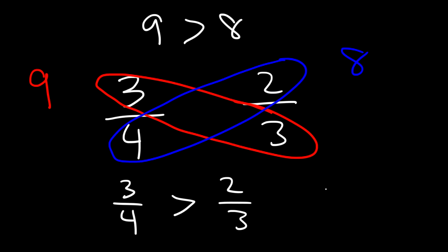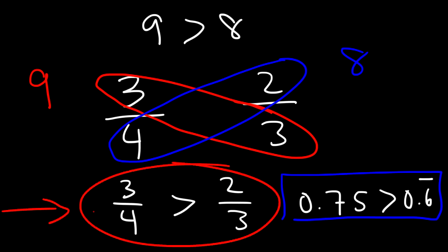Now we know 3 over 4 if you convert that into a decimal that's going to be 0.75. 2 over 3 if you type that in is 0.6 repeated. And so 0.75 is greater than 0.6 repeated. Which means that this is a true statement. 3 over 4 is a fraction greater in value than 2 over 3. And so this is a simple technique that you could use to see which fraction is greater.